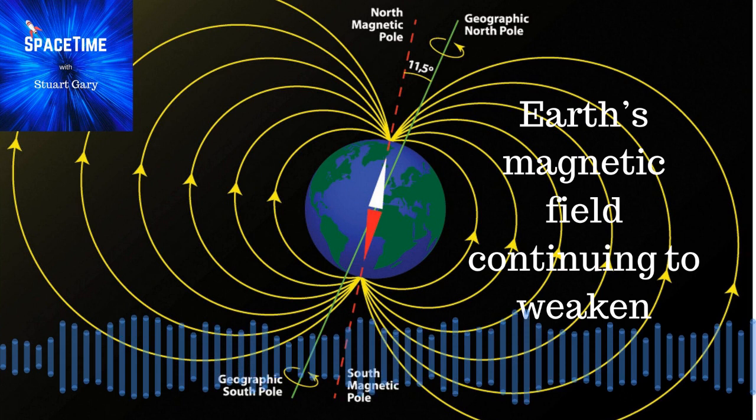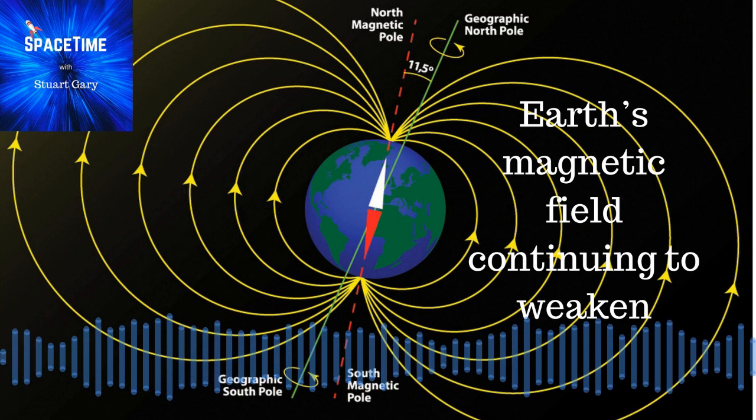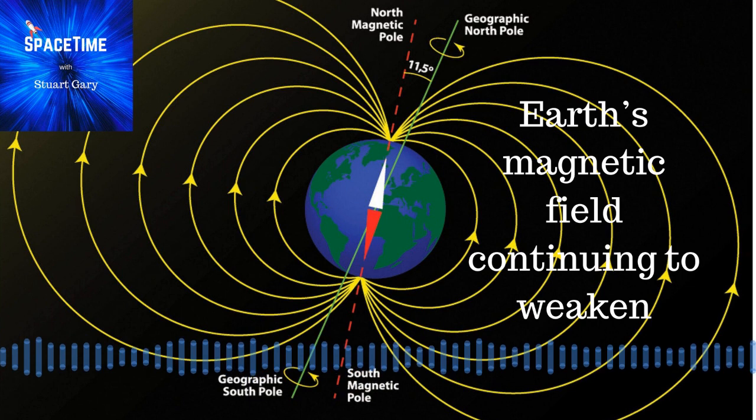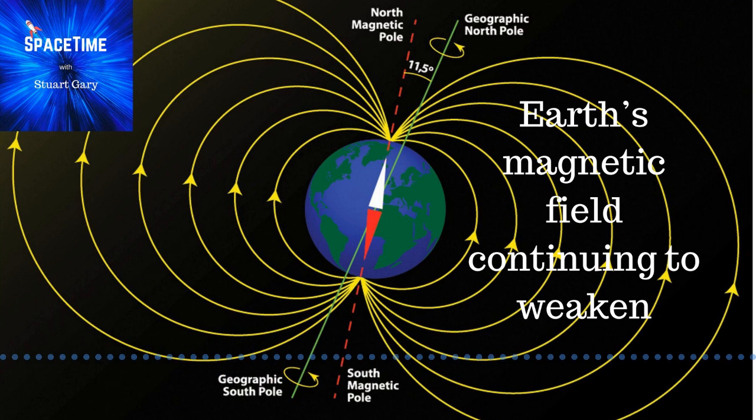Over the last 200 years, Earth's magnetic field has lost around 9% of its strength on global average. And from 1970 till now, the minimum field strength of the South Atlantic anomaly has dropped from around 24,000 nanoteslas to just 22,000. While at the same time, the area of the anomaly has grown, and it's been moving westwards at around 20 kilometres a year.